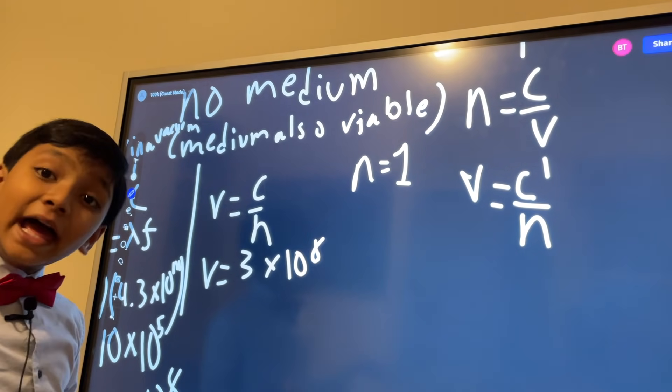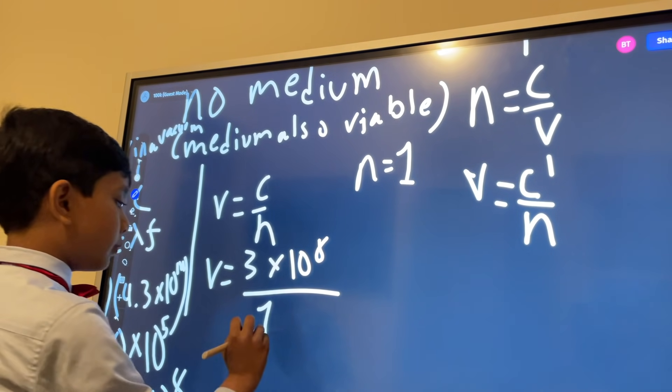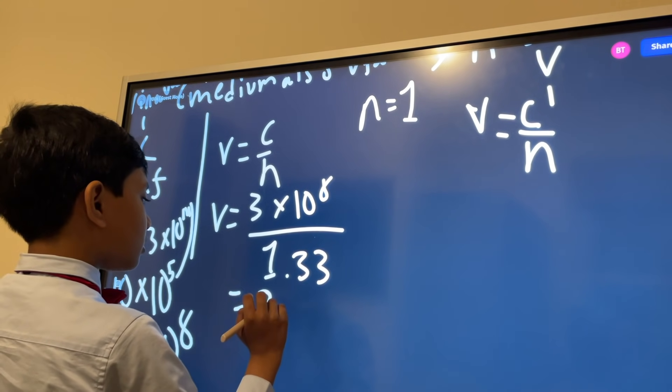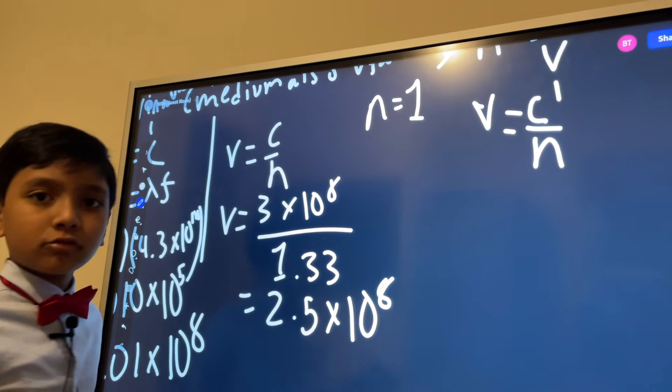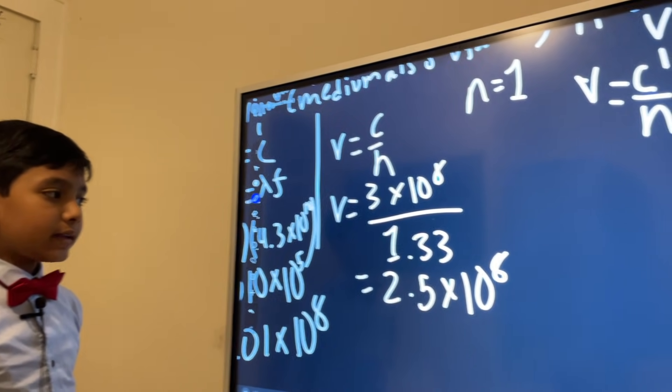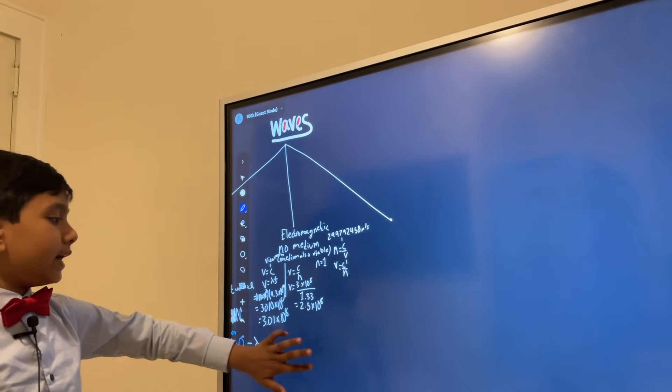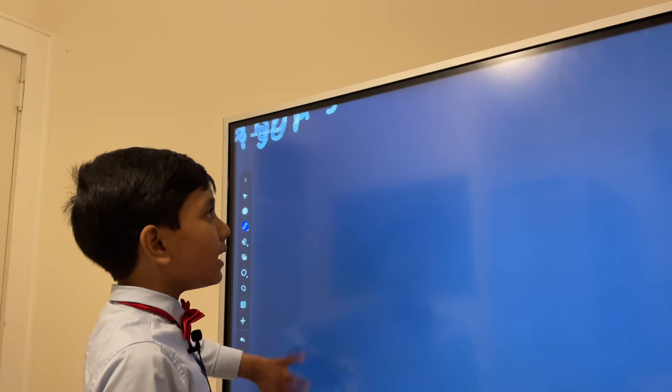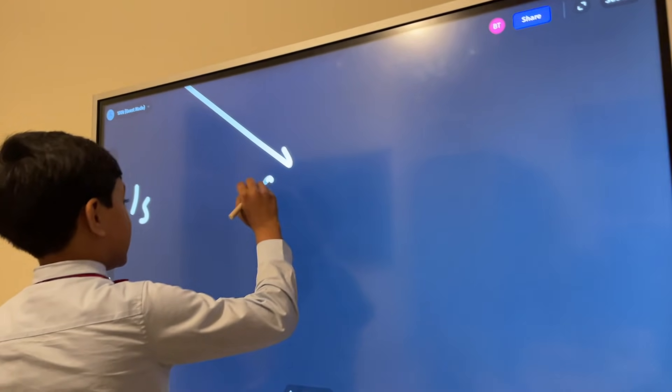And N, what about N? Well that would be 1.33, and that would be 2.5 times 10 to the 8, about. Now that is our answer for electromagnetic waves. And finally, the last kind of wave, the standing wave.